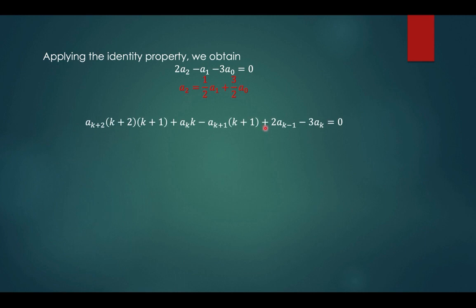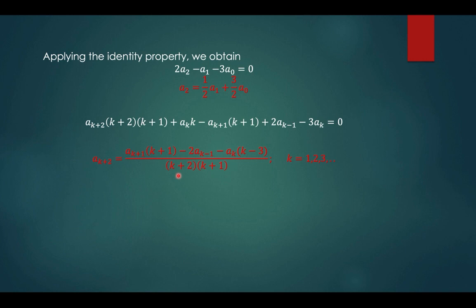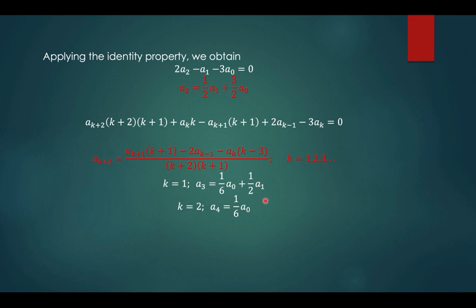For the x raised to k coefficient, equating to 0 gives a recurrence relation with highest subscript a_(k+2), solved in terms of a_(k+1), a_k, and a_(k-1), where k starts from 1, 2, 3, and so on. Computing: at k equals 1, a_3 equals (1/6)a_0 plus (1/2)a_1. At k equals 2, a_4 equals (1/6)a_0. At k equals 3, a_5 equals negative (7/60)a_0 minus (1/20)a_1.